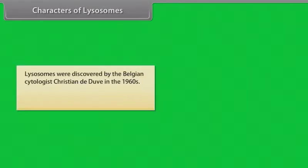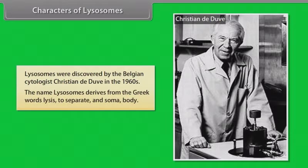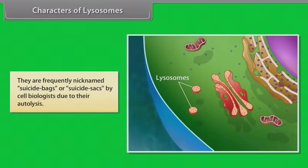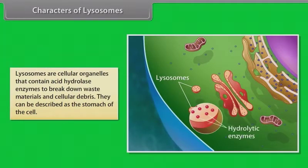Lysosomes were discovered by the Belgian cytologist Christian de Duve in the 1960s. The name lysosome derives from the Greek words lysis, meaning to separate, and soma, meaning body. They are frequently nicknamed suicide bags or suicide sacks by cell biologists. Lysosomes are cellular organelles that contain acid hydrolase enzymes to break down waste materials and cellular debris.